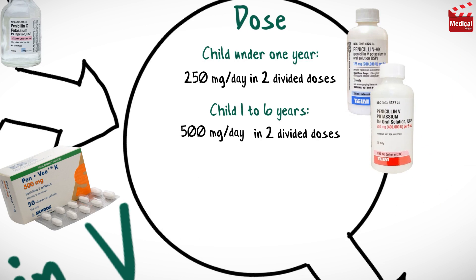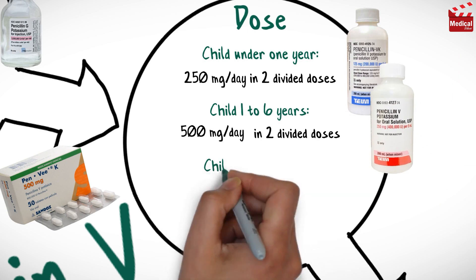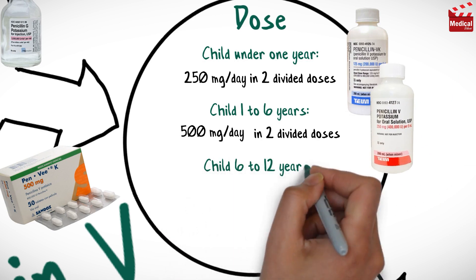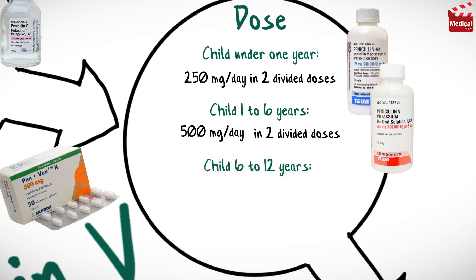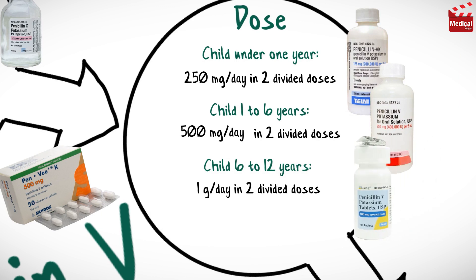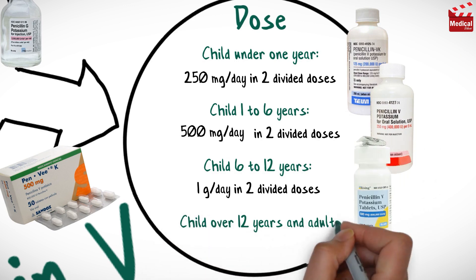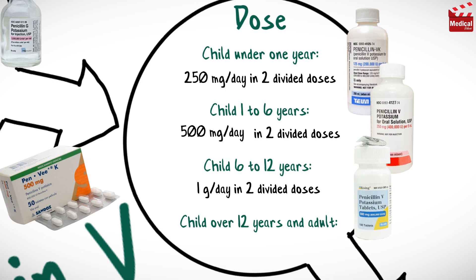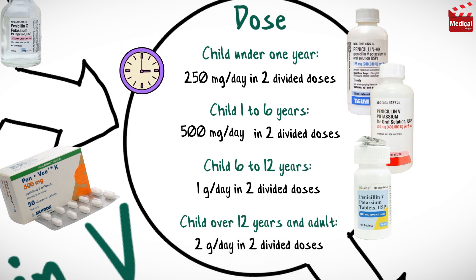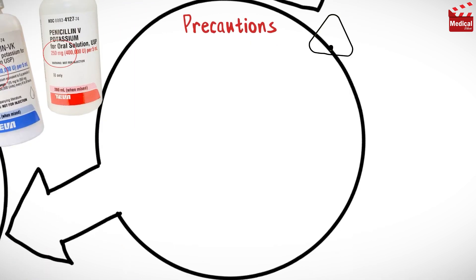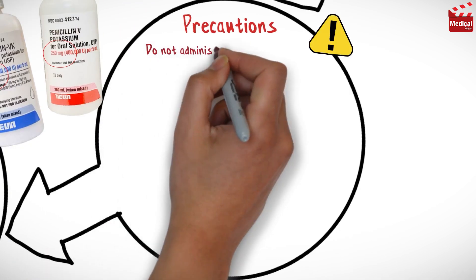For children from 6 to 12 years, the dose is 1 gram per day in two divided doses, and for children over 12 years and adults, 2 grams per day in two divided doses.